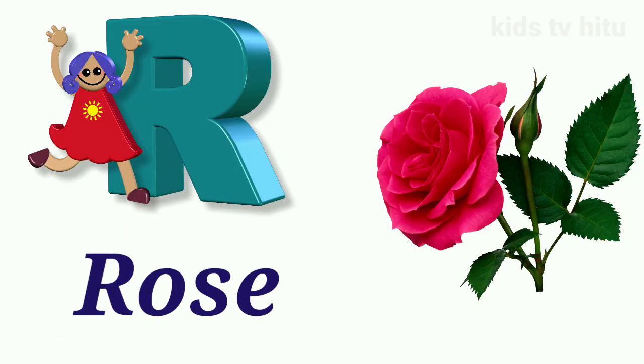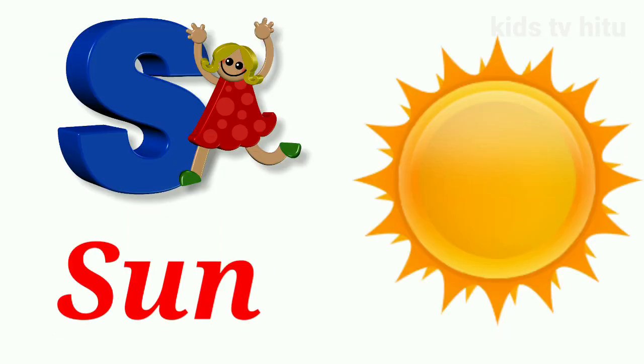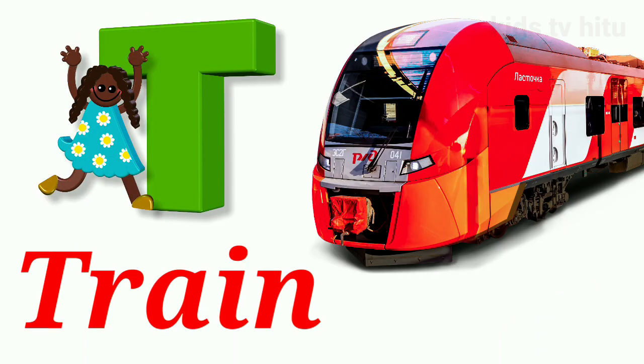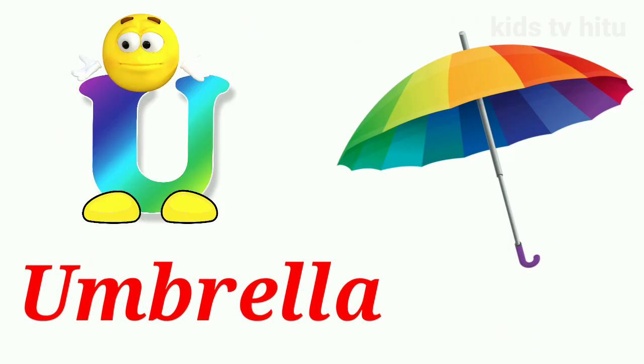R for rose. S for sun. T for train. U for umbrella.